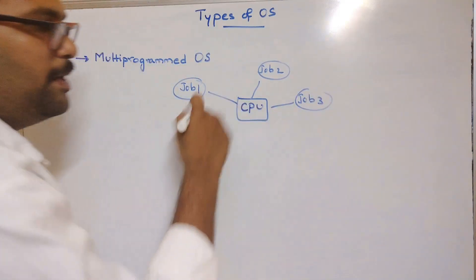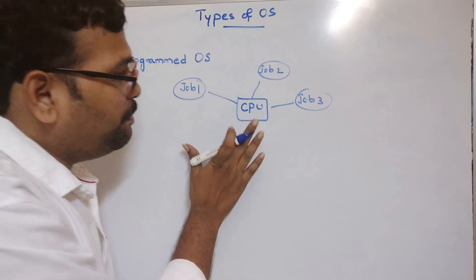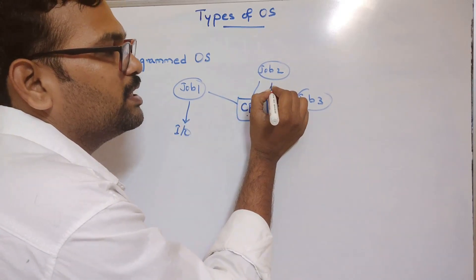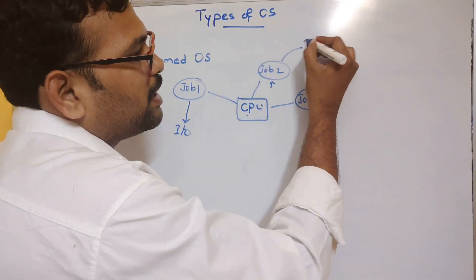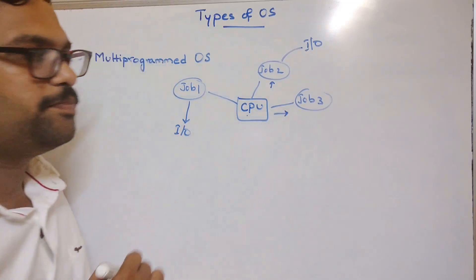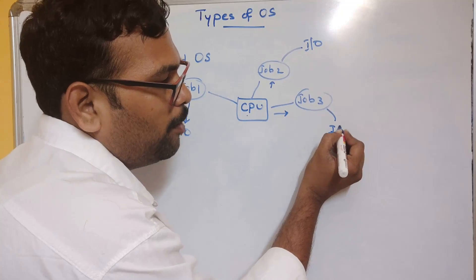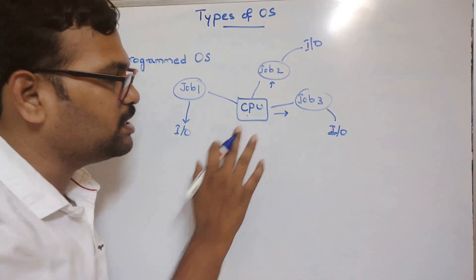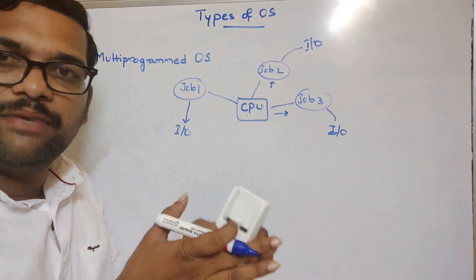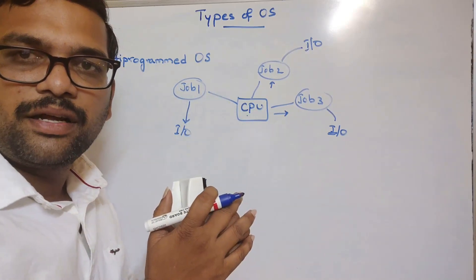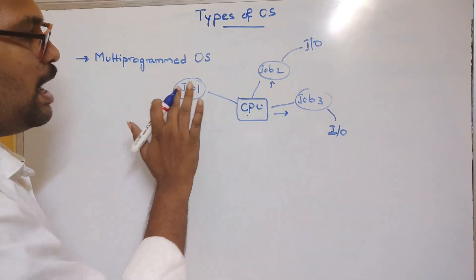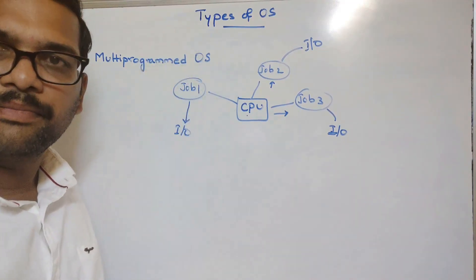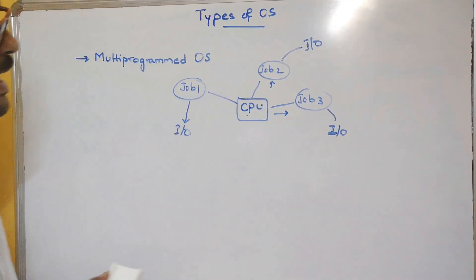Multiple processes — job one, job two, job three — are given to the CPU. The CPU first executes job one; if job one requires I/O, the CPU immediately starts executing job two. If job two also requires I/O, it moves to job three. If job three requires I/O, the CPU resumes job one. This way the CPU is never in an idle state — it switches between processes based on I/O operations. That is why we call it a multi-programmed operating system.